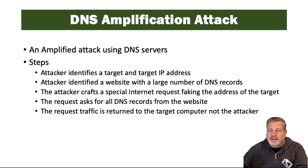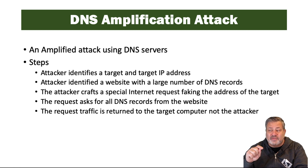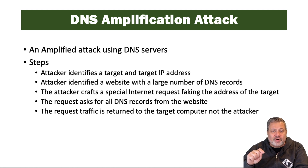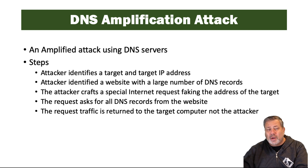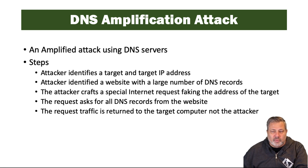The DNS amplification attack uses DNS servers. The steps for this attack are: the attacker identifies a target and the target IP address; the attacker identifies a website with a large number of DNS records; the attacker crafts a special internet request faking the address of the target, and then the request asks for all the DNS records for the website from the DNS server. That request is returned as a whole bunch of traffic, and the attacked system is overloaded with responses.